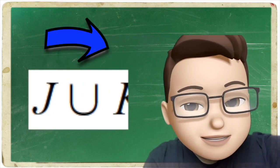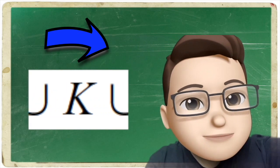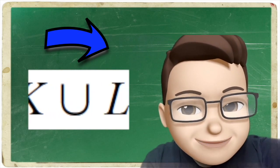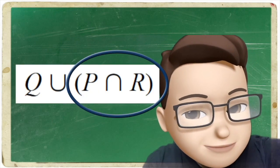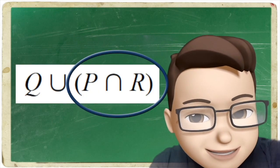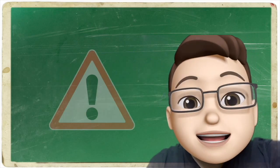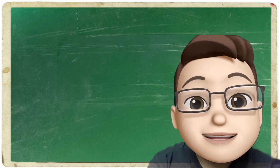Combined operations of sets are solved from left to right. However, if there are operations in brackets, the operations in the brackets must be carried out first. Remember that. Now, let's have a look at the first example.